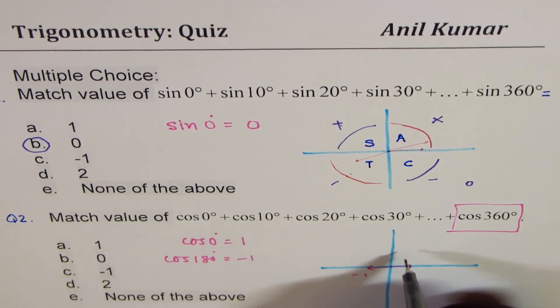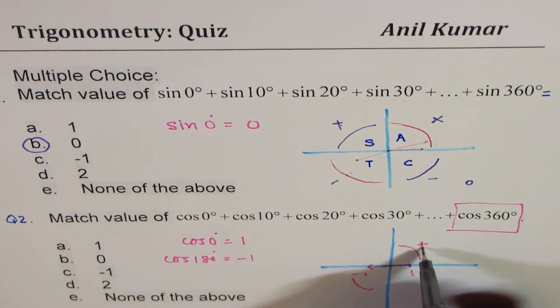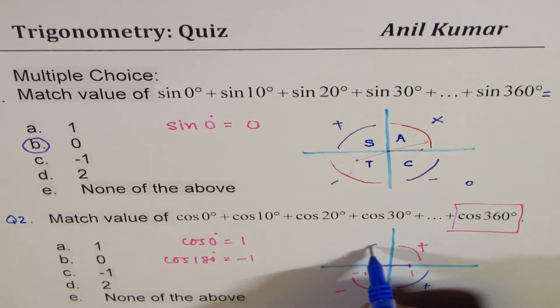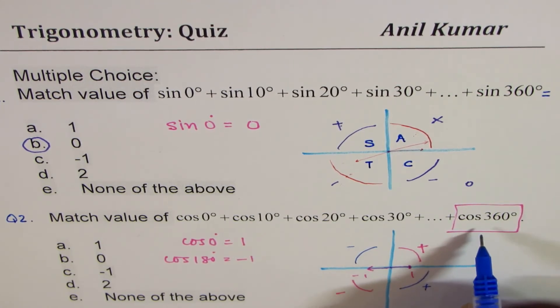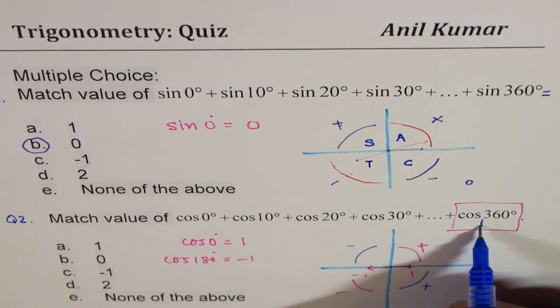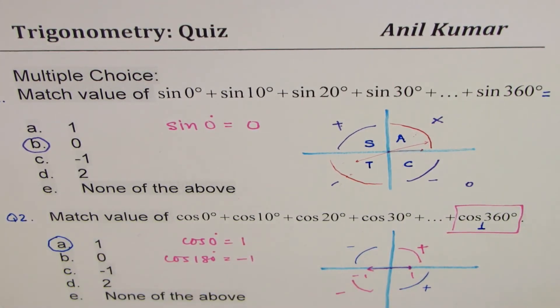So all those values will cancel. This is plus. This is minus. They will cancel. As far as these values are concerned, this is plus. That is minus. That will cancel. However, we have an extra term here. 0 will cancel with 180. But with 360, we'll have value 1. And so now, the answer is 1 and not 0.